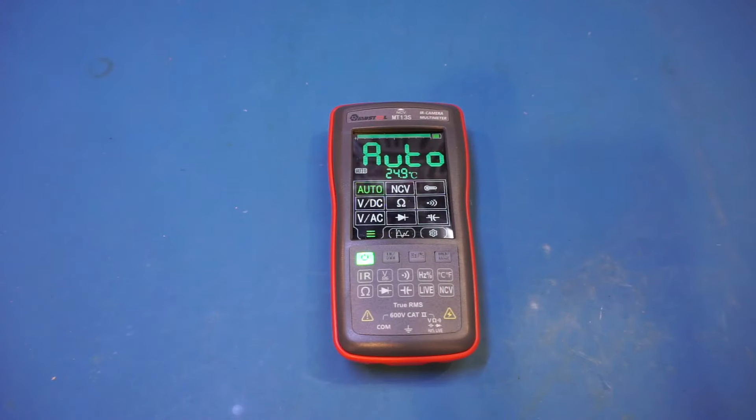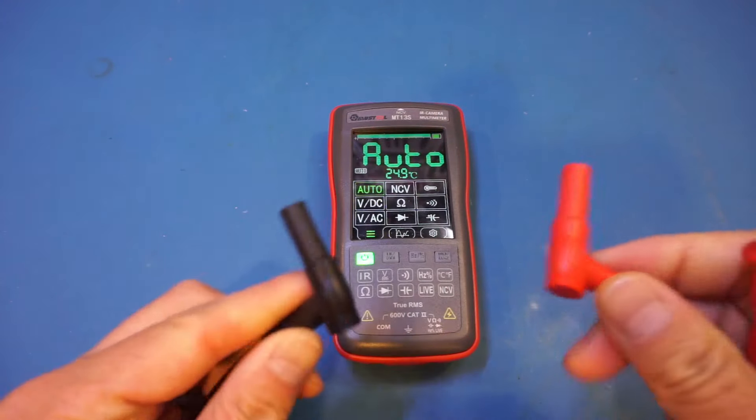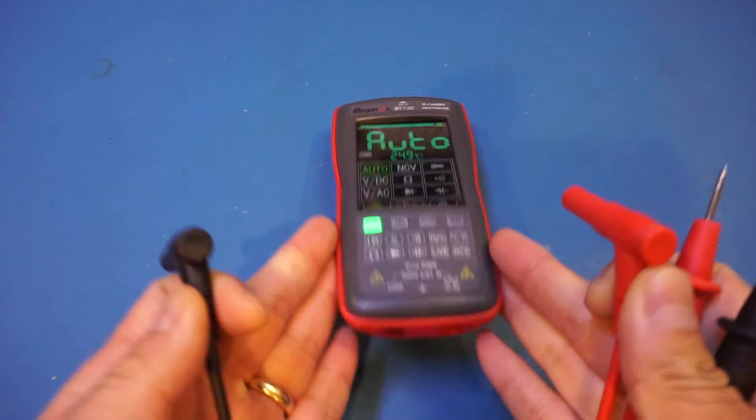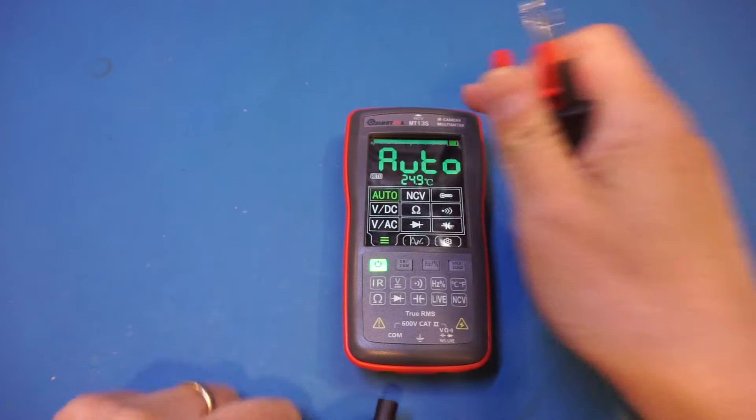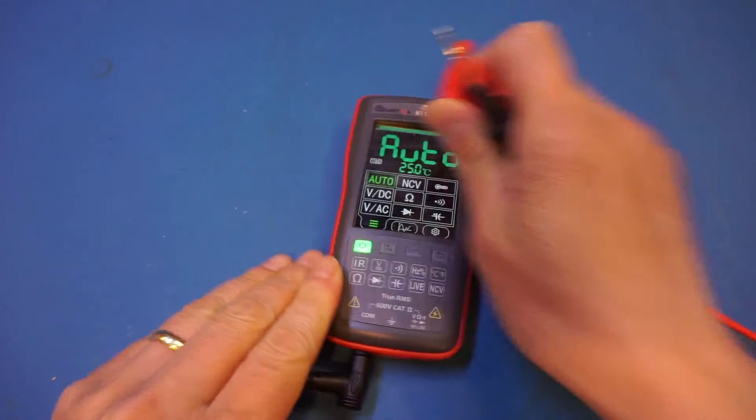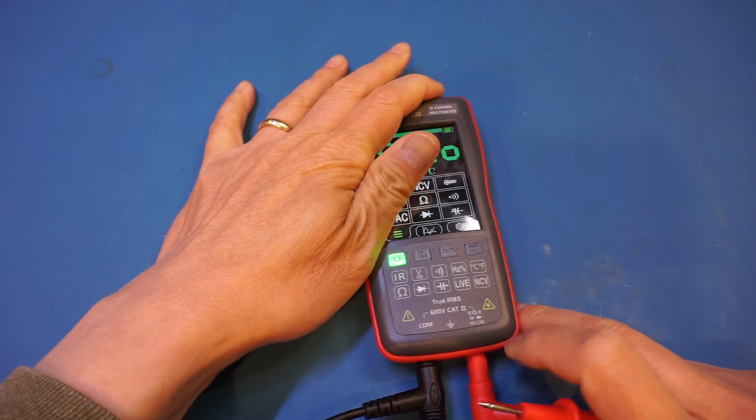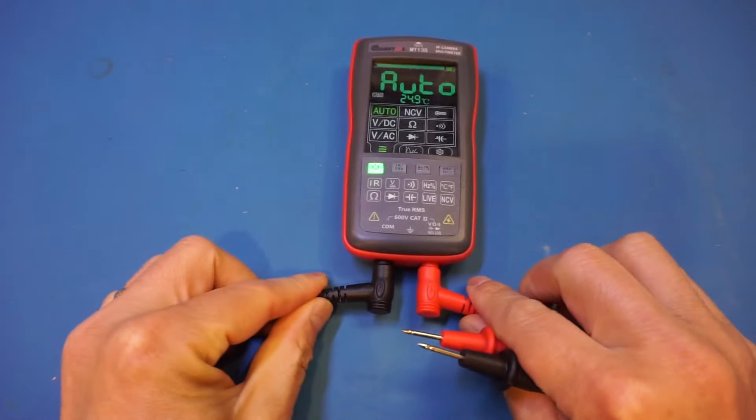The same comments I had with the ET12S is that the leads supplied are angled. And because the jacks are on the side, it does feel a little bit awkward when plugged in. But it would be nice if they could supply some straight leads instead of these angled ones.